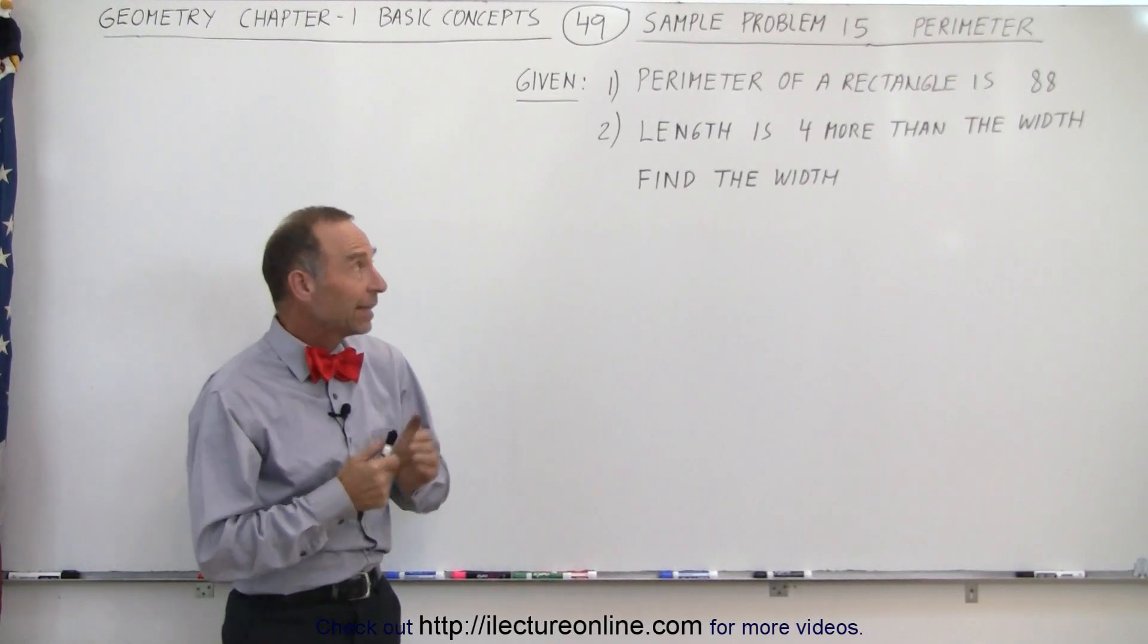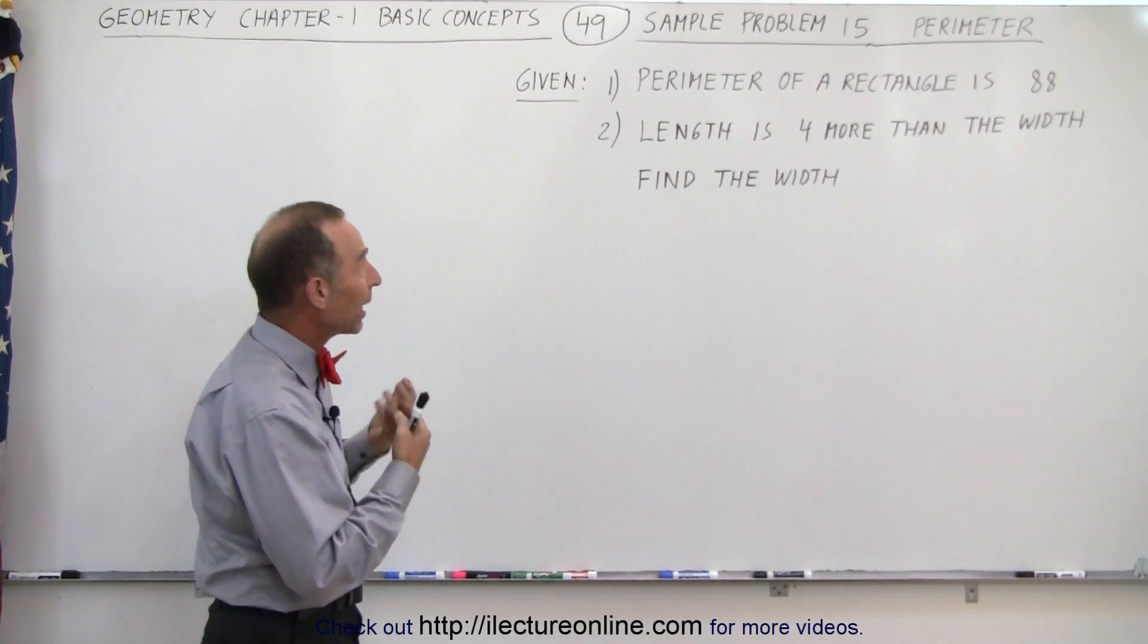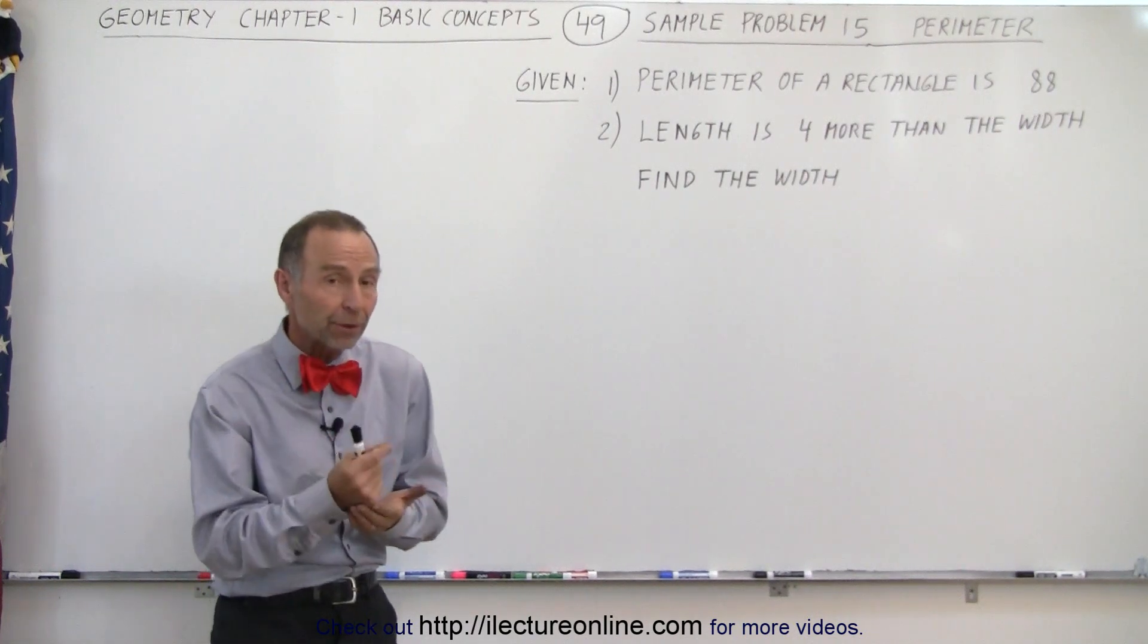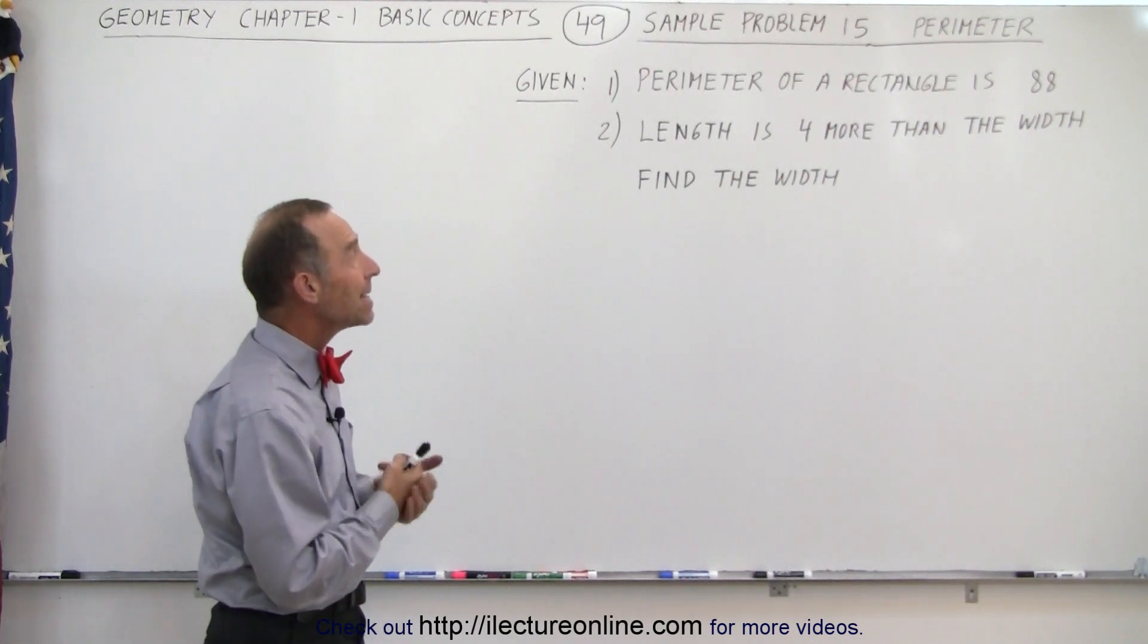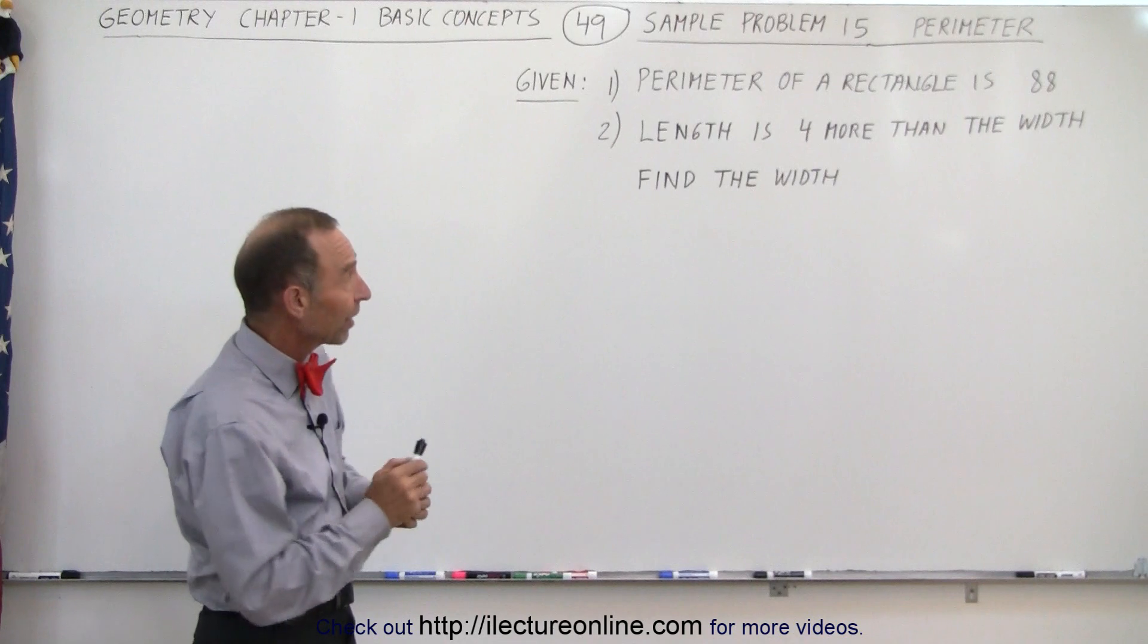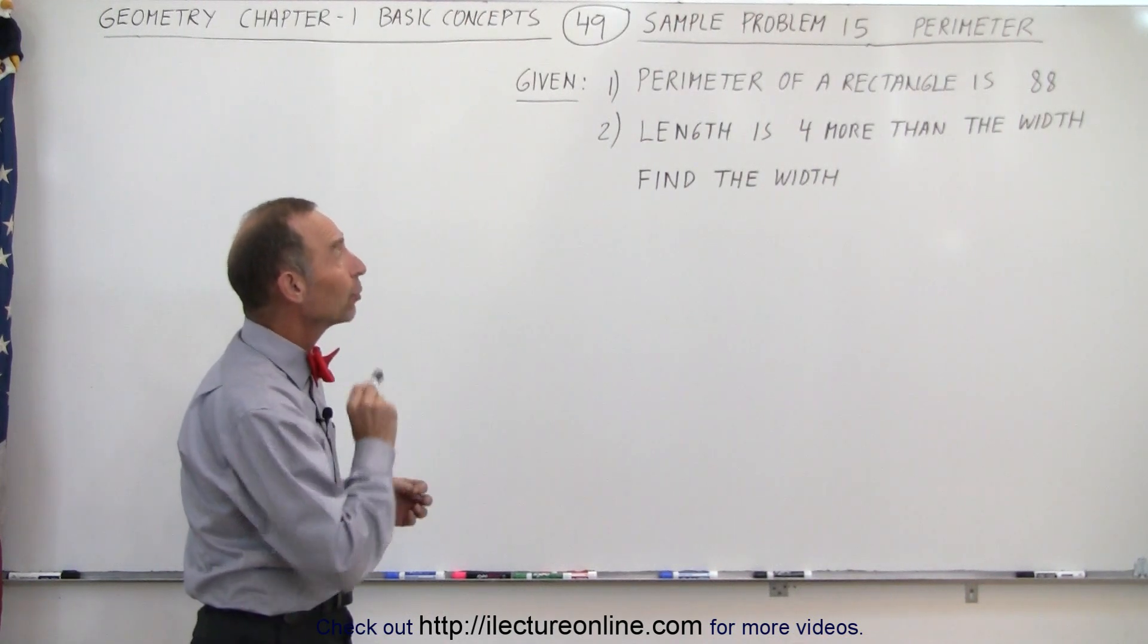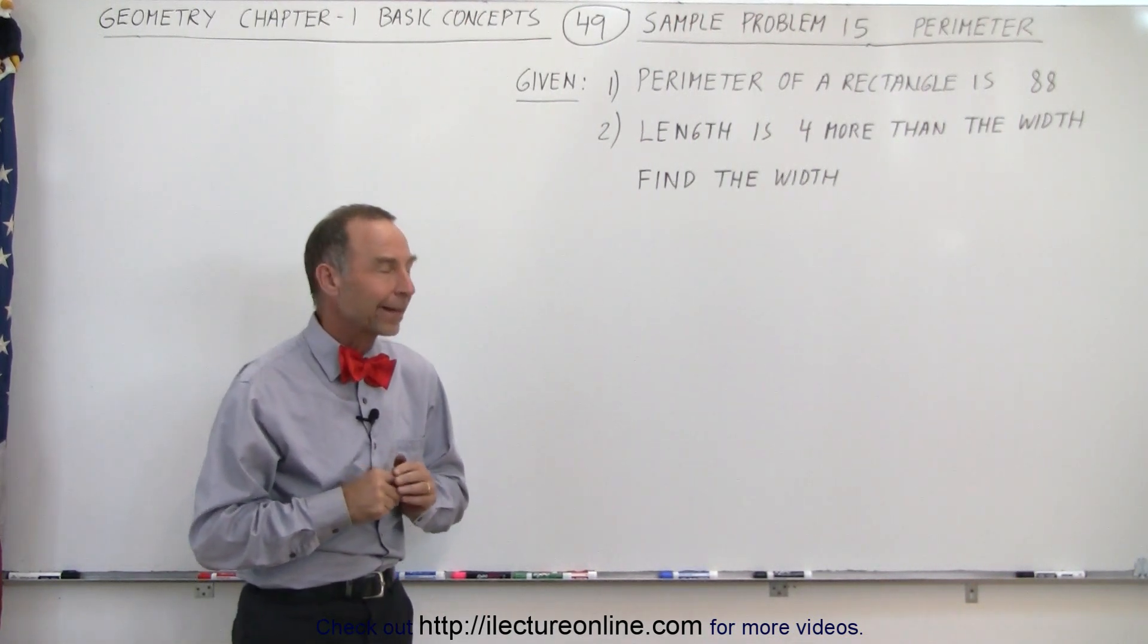Welcome to iLecture Online. In this example we're given a rectangle and told that the perimeter of the rectangle is 88. They also tell us that the length is 4 more than the width. Find the width of this rectangle.